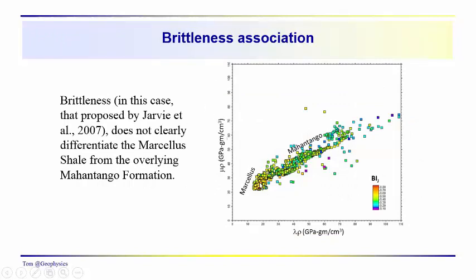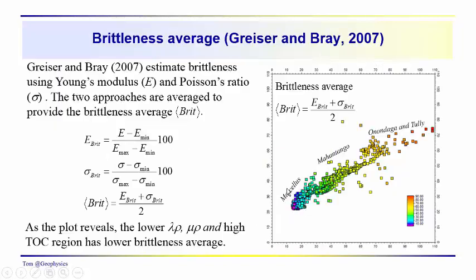Looking at the brittleness associations using the Jarvie index, brittleness really doesn't uniquely identify the high TOC region in the Marcellus, because we see relatively high brittleness stretching out through the Mahantango as well. So brittleness is not uniquely associated with high TOC and doesn't clearly differentiate the Marcellus from the overlying Mahantango.